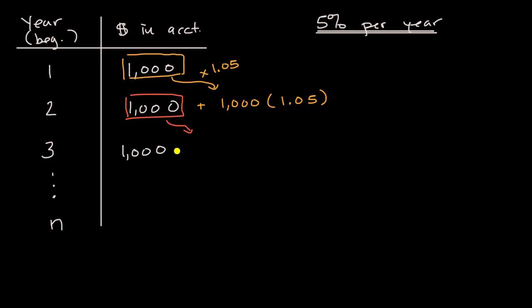So this is now going to be $1,000 times 1.05. And then that money that we originally deposited from year one, that was $1,000 times 1.05 in year two, that's going to grow by another 5%.